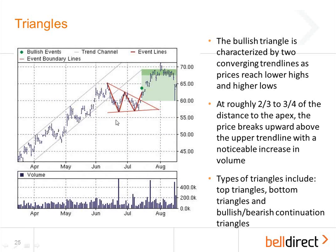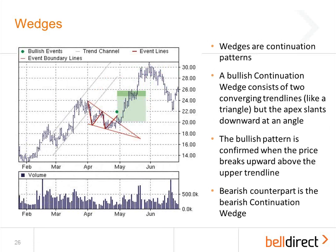Wedges are very similar to triangles. They're always continuation patterns. The difference between a triangle and a wedge is that in a wedge, the apex is actually pointed down somewhat. In a triangle, the lower trend line would be horizontal or perhaps sloping upwards; if it's slanting downwards, it becomes a wedge. But it's very similar — you have these converging lines of support and resistance indicating an unstable situation. The price will break out either upward or downward from the wedge.